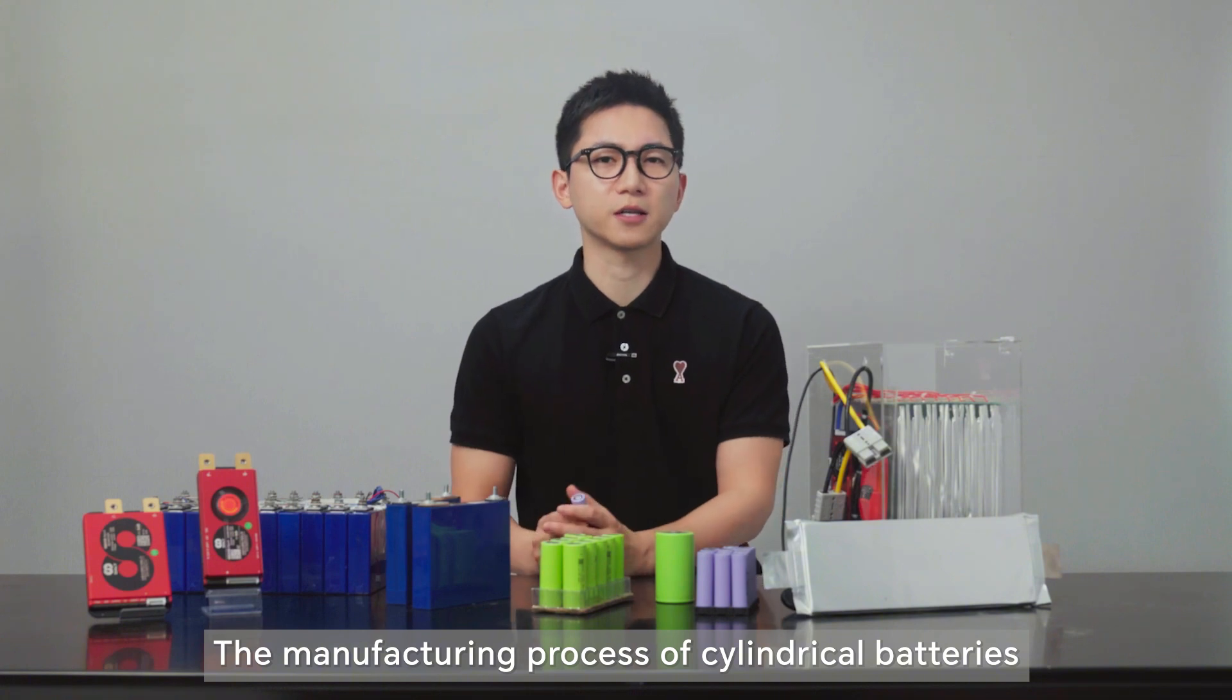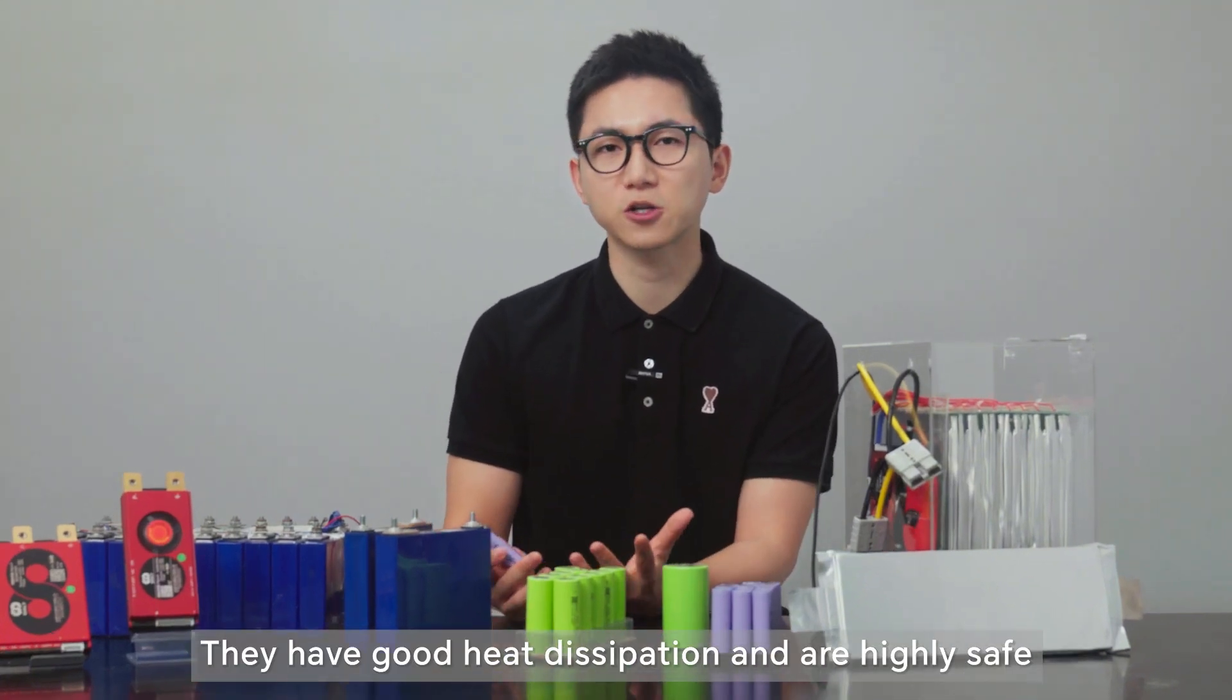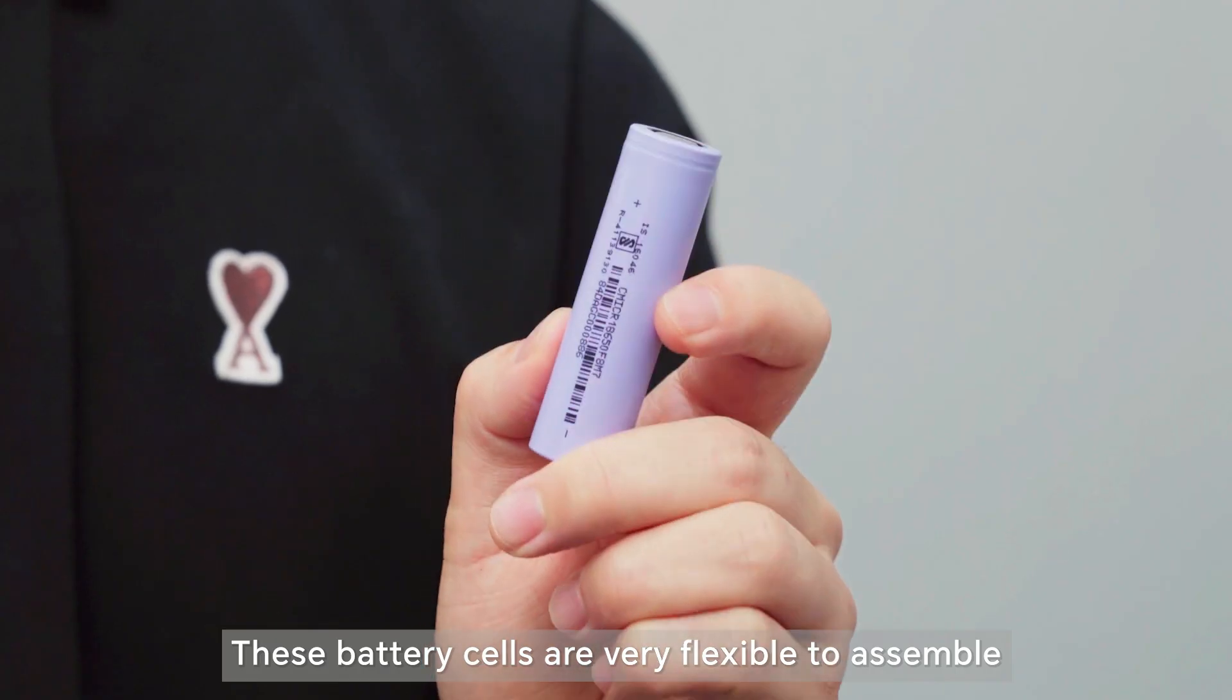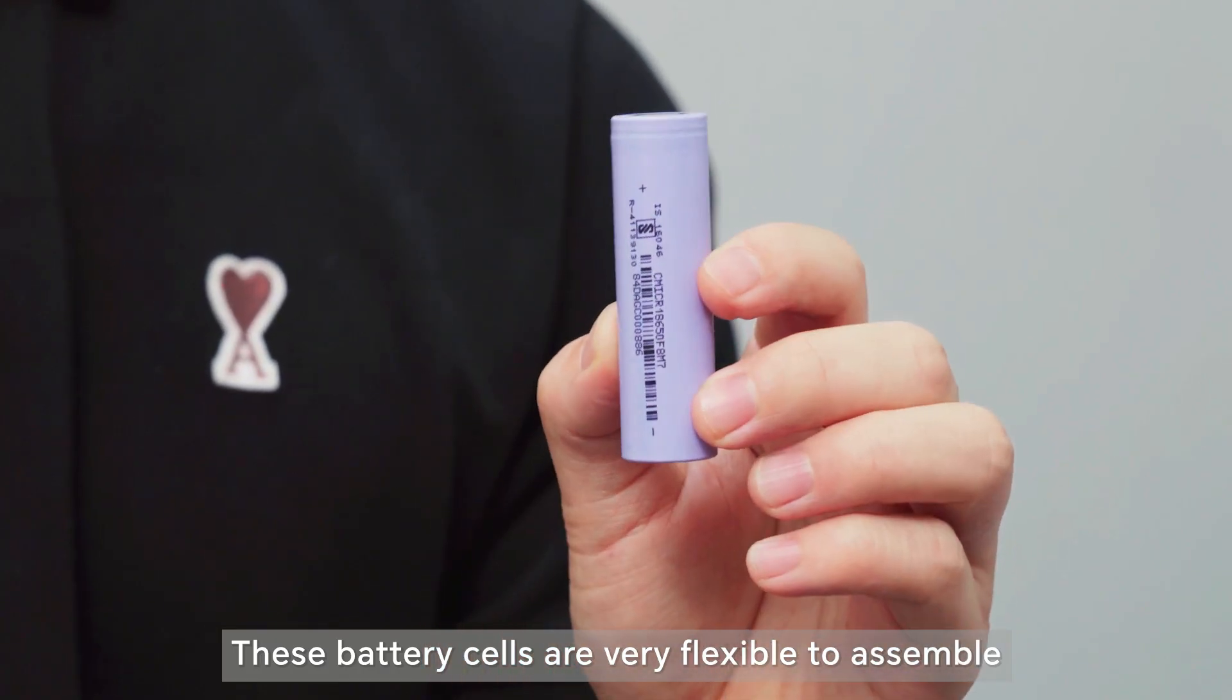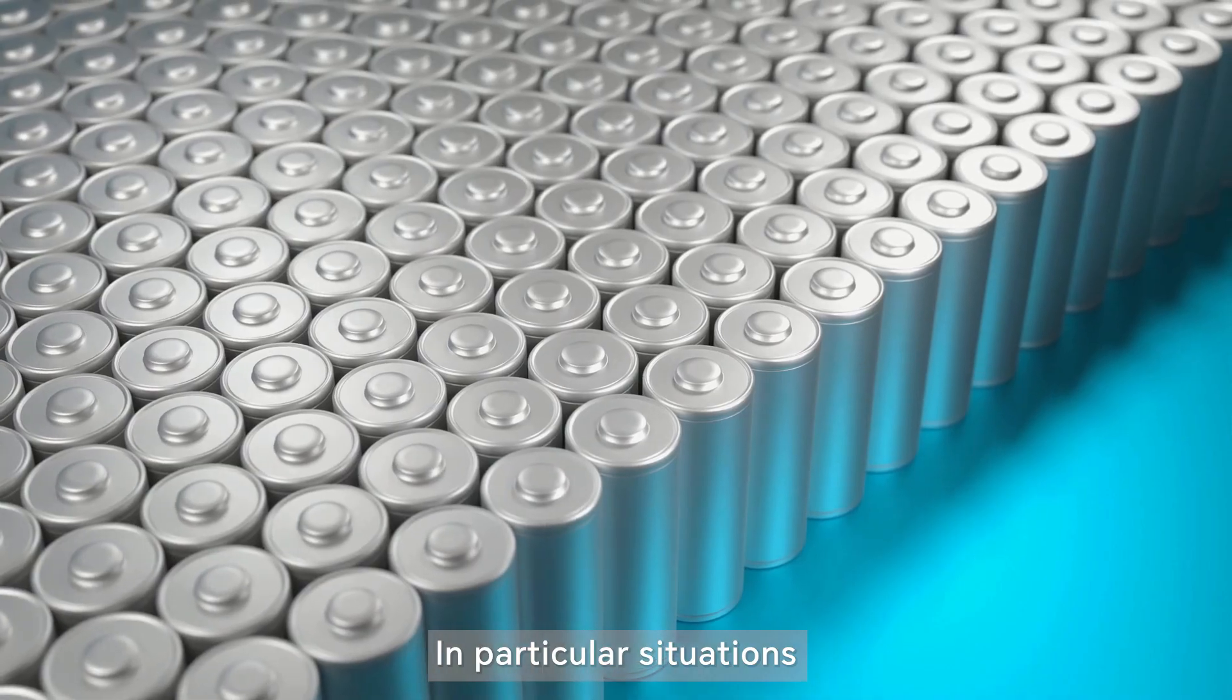The manufacturing process of cylindrical batteries is quite mature. They have good heat dissipation and are relatively safe. These battery cells are very flexible to assemble and are particularly good for non-standard sized battery compartments.